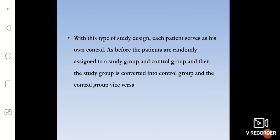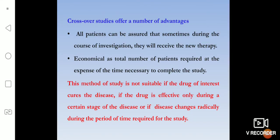In the crossover design, each patient serves as his own control. Patients are randomly assigned to a study group and control group, then switched over. The crossover design offers advantages: all patients can be assured they will receive the new therapy at some point, and it is economical as the total number of patients required is less. However, this method is not suitable if the drug cures the disease, or if the drug is effective only during a certain stage of the disease, or if the disease changes radically during the study period.